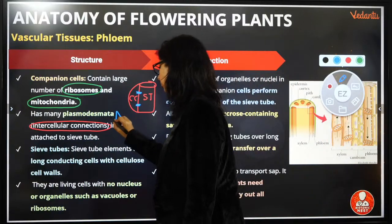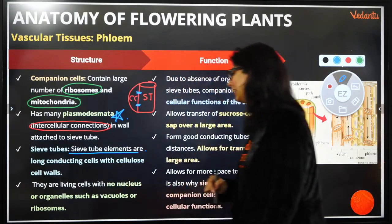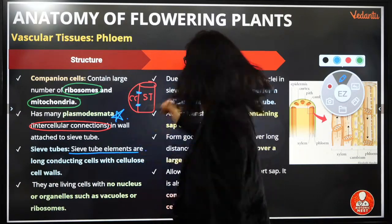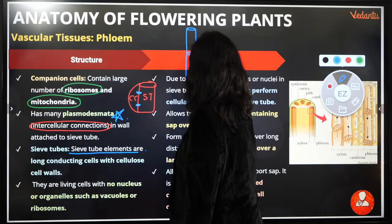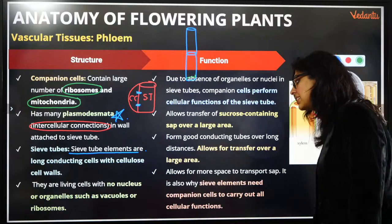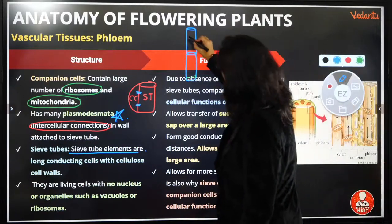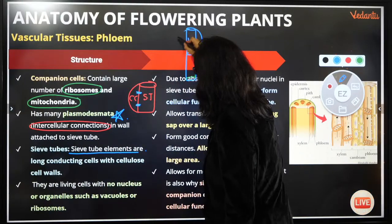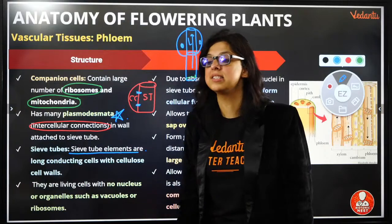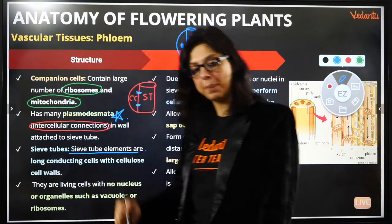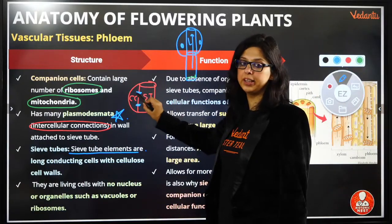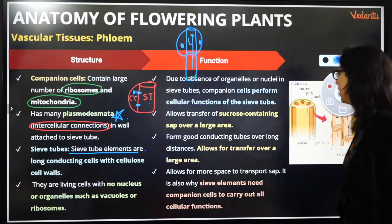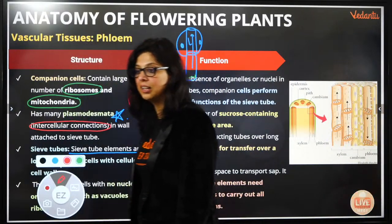The sucrose sap is transported over a large area. Source is leaves (where photosynthesis occurs) and the sink is the root. Information for transport comes from companion cells. Companion cells carry out the cellular functions for the sieve tube. The sieve tube needs to be empty — devoid of nucleus and mitochondria — so there is space for food to be transported. The companion cell provides all the information needed for transport.